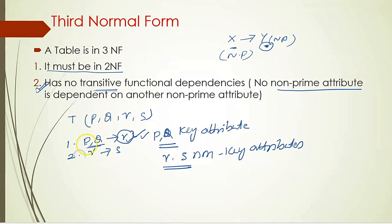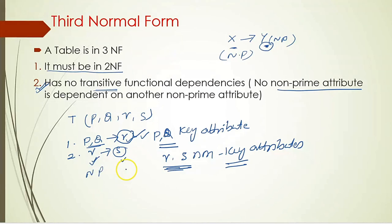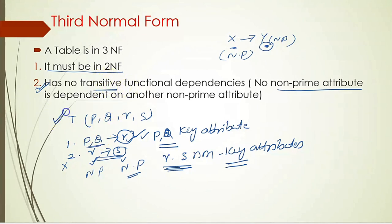Now let us come to the second functional dependency: R derives S. So S is functionally dependent on R. S is a non-key attribute, and R is also a non-key attribute — both are non-prime attributes. According to the rule, no non-prime attribute should be dependent on another non-prime attribute — but that has happened here with R→S. So this does not satisfy the second rule, and therefore relation T is not in the third normal form. This means we need to decompose the relation to satisfy the rules of third normal form.